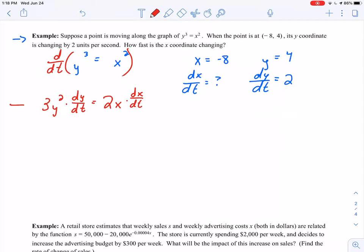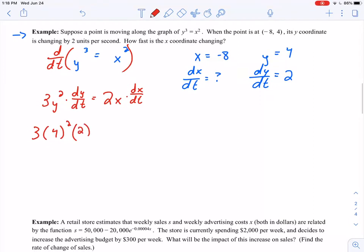So here's my derivative. I found my derivative. Let's take everything that we know and plug it into that derivative. So let's see. Let's erase this so we don't mix it up for a negative. 3 times y, what is y? That's 4 squared. Times dy over dt, that's 2. Equals 2 times x is negative 8. Times dx over dt.